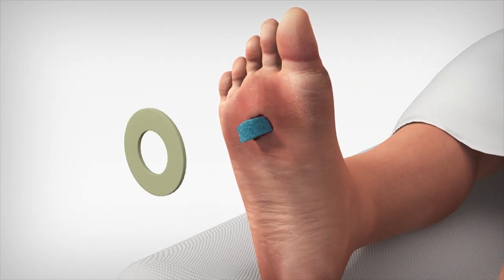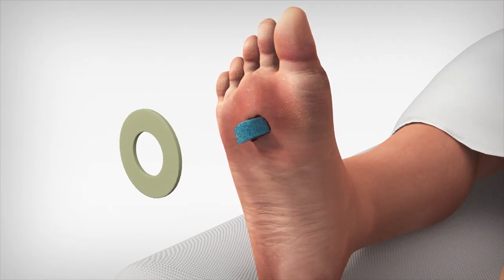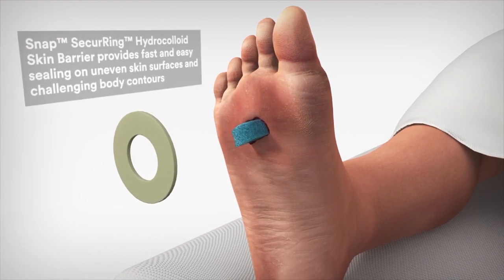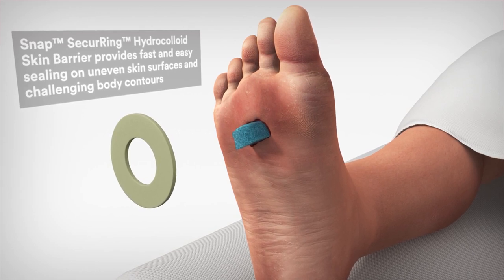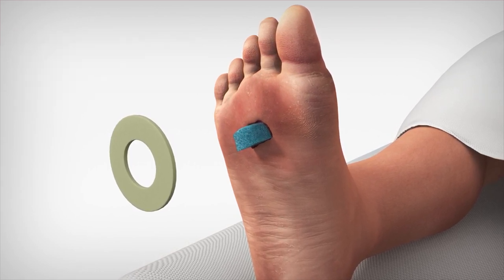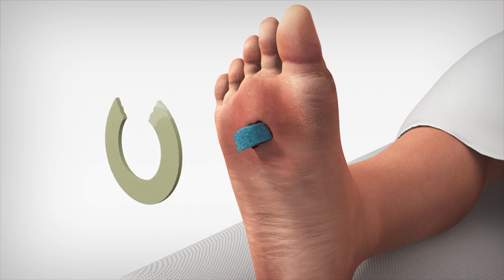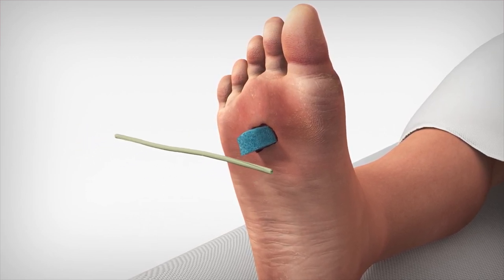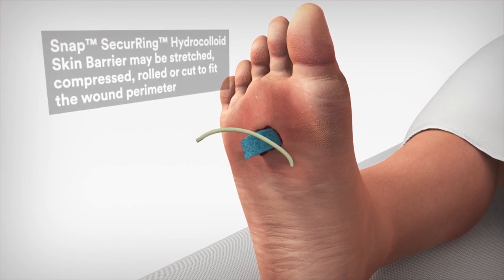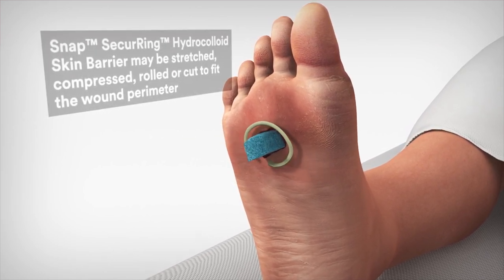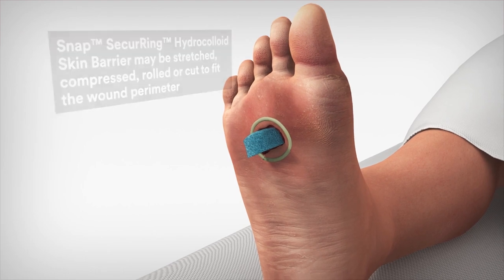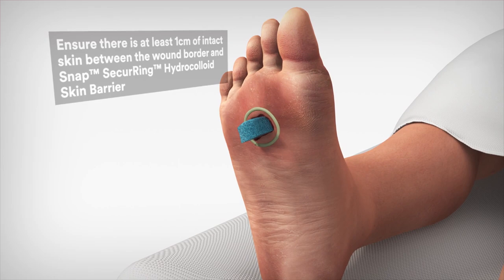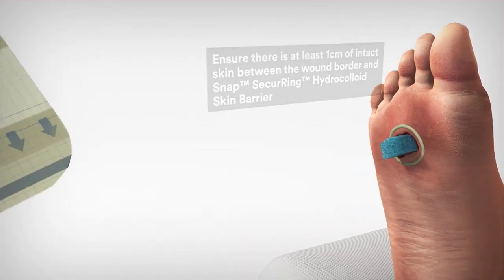To help create a seal, the SNAP securing hydrocolloid skin barrier may be utilized. This is a sterile moldable hydrocolloid ring designed to provide fast and easy sealing on uneven skin surfaces and challenging body contours. Before applying the SNAP securing hydrocolloid skin barrier, be sure the skin is clean and dry. Shape the hydrocolloid to fit around the outside of the patient's wound. Using light pressure, apply the SNAP securing hydrocolloid skin barrier around the wound. Do not place the hydrocolloid directly into the wound.